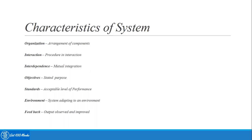Next is the objective — what is the core purpose of the system, or for what the system was developed? Next is standards, which refers to the expected acceptable level of performance and what is considered to be in line with the system. Regarding environment, a system operates within an environment — everything outside the system boundary. The environment surrounds the system, both affecting it and being affected by it.